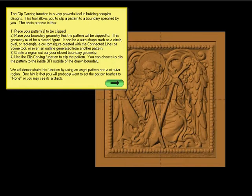You can choose to clip the pattern to the inside or the outside of your drawn boundary. Carve Right is going to demonstrate this function by using an angel pattern and a circular region. One hint is that you will probably want to set the pattern feather to none, or you may see artifacts.